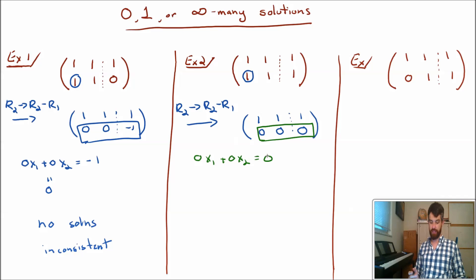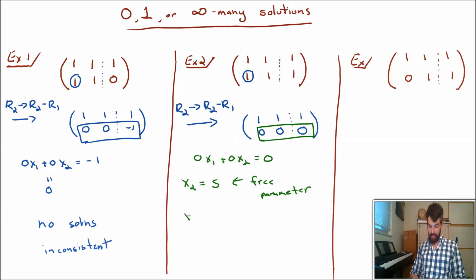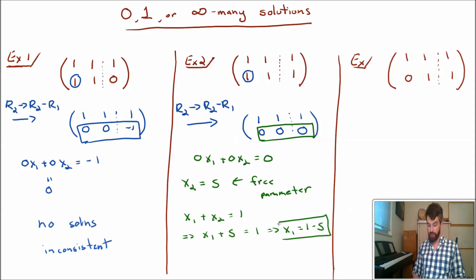So what I'm going to do is let x2 equal s, where s is just some arbitrary free parameter — it could be anything. Then I'll figure out what x1 is in terms of this parameter. From the first row, x1 plus x2 equals 1, so substituting in s gives x1 plus s equals 1, or in other words x1 equals 1 minus s.